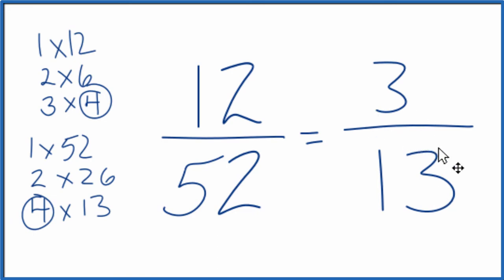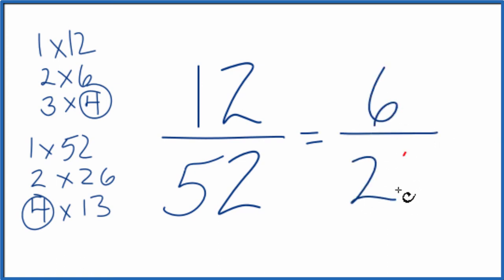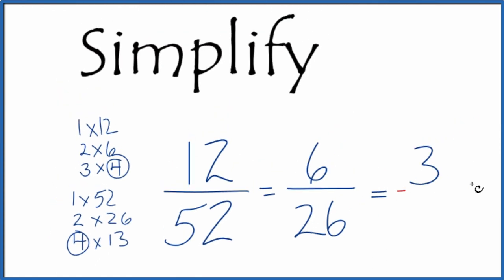There is one other way you could do this. If you didn't know that four went into 52 thirteen times, you could just divide 12 by two and 52 by two, since they're even numbers. That would give you six over 26. And then you could divide by two again and you get three over 13, which is what we found before.